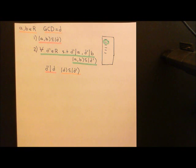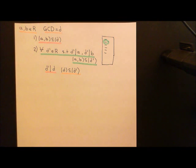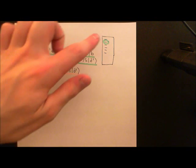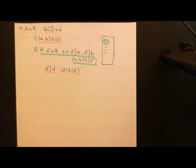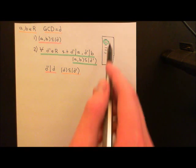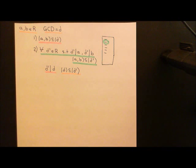Now, the first thing to say is that a GCD does not have to exist. In certain rings, you can find two elements A and B in the commutative ring where there is no greatest common divisor. You might construct the list of common divisors, and it may be the case that none of those common divisors satisfies the property that its principal ideal is contained within the principal ideals of all the other common divisors.